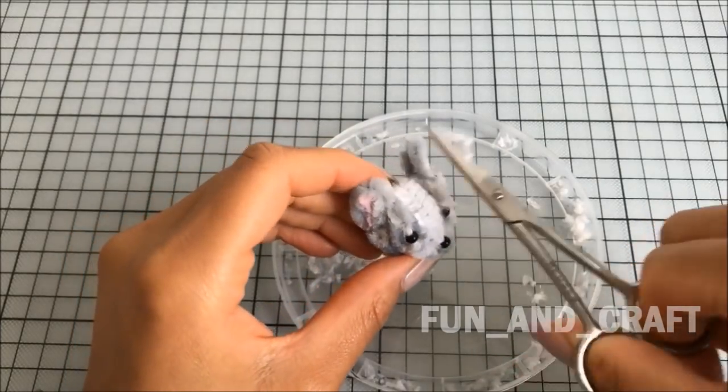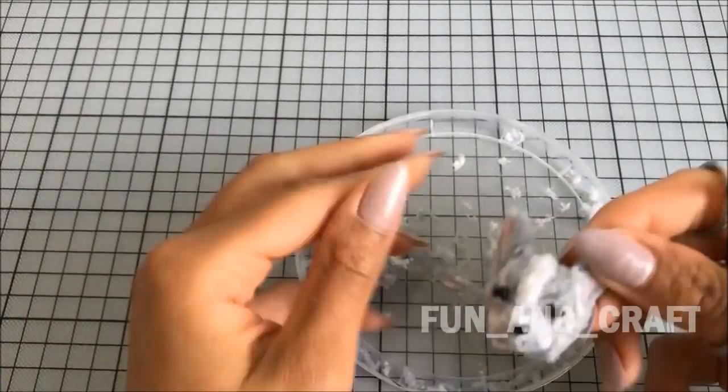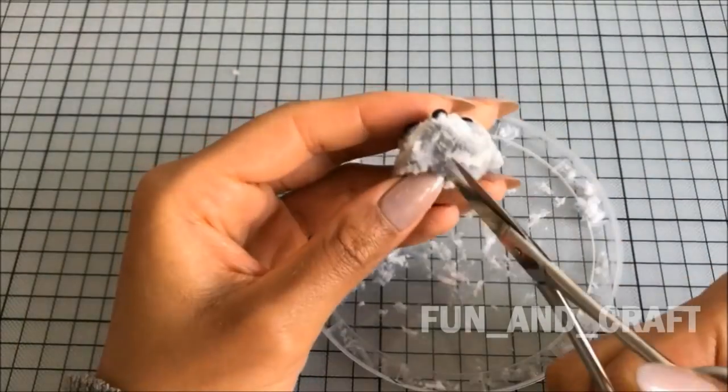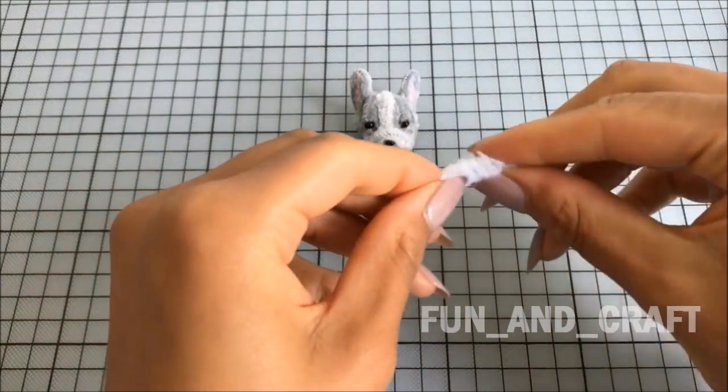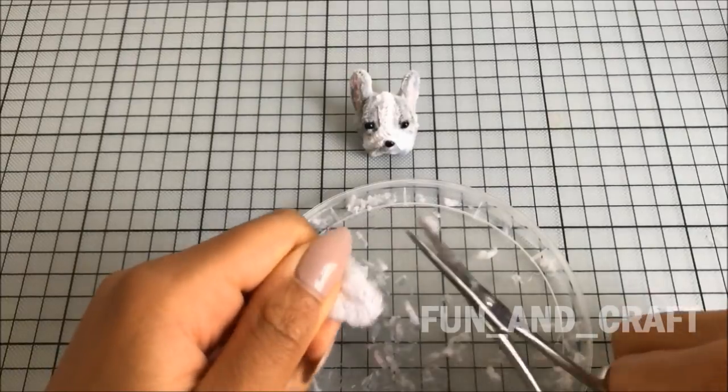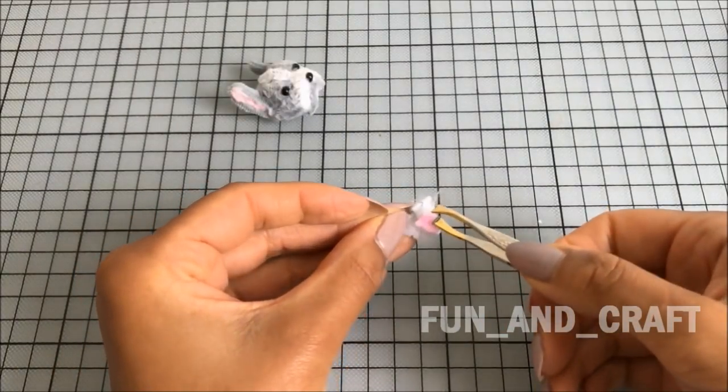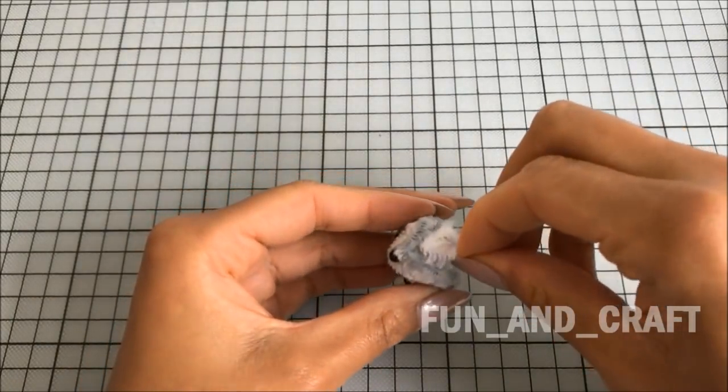Use another white pipe cleaner to make the mouth. Bend it into a U-shape and cut off any fluff. Add a tiny piece of pink felt on top for the tongue. When attaching it to the dog's head, don't get any glue onto the part that is supposed to be flexible so you can open the mouth.